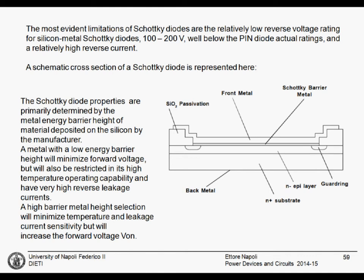If we have a metal with a low energy barrier height, this will minimize the forward voltage. But this also increases the leakage current from the device, and this current also increases with the temperature. On the other hand, if you increase the height of the barrier, this will reduce the leakage current, but also tends to minimize the improvements from having a metal-to-semiconductor barrier with a threshold voltage lower than 0.7 volts.